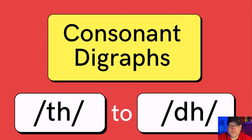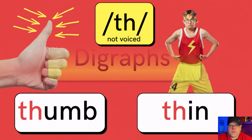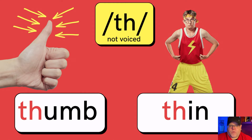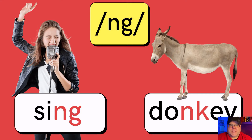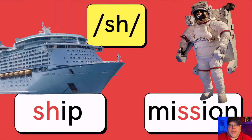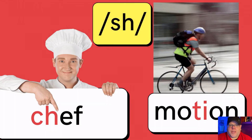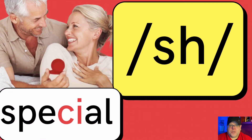These next phonemes are called consonant digraphs. Digraphs are when you put two letters together to make a new sound — in this case, consonant letters put together to make a new sound. The first one is TH, and this is not voiced — all of the air comes through your lips with no vibration in your throat — like thumb or thin. Then we have TH that is voiced; the difference is a vibration in your throat — like this or feather. Next: NG like sing or donkey. SH like ship or mission. SH as in chef or motion, or as in special.